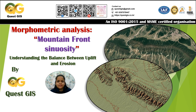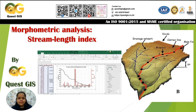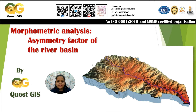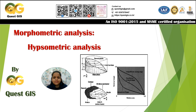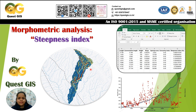Hello everyone, welcome to another video in the morphometric analysis series. In this video we will discuss another morphometric parameter: mountain front sinuosity. If you have followed our tutorials on the morphometric series so far, you will know that all the morphometric and geomorphic indices we have discussed include stream length gradient index, drainage basin asymmetry, hypsometric integral, and steepness index.